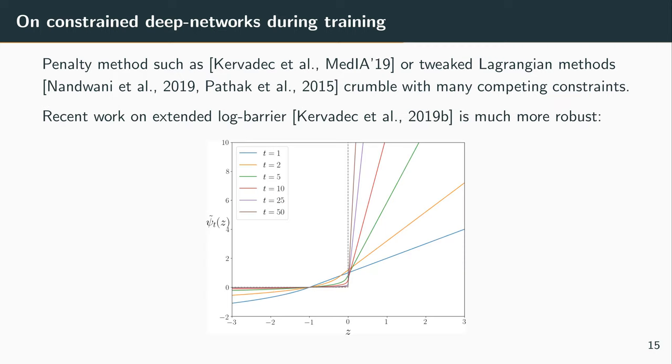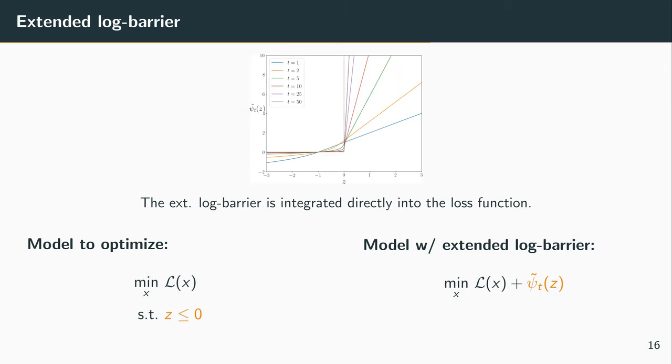They are either very unstable or just predict empty segmentation. So our recent work on extended log barrier proved to be much more robust and actually enabled the model that we are proposing.